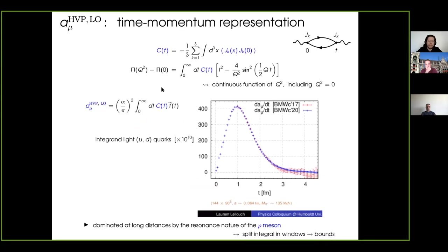There is another representation which is safe with respect to the small Q squared problem — the so-called time-momentum representation. In this representation, the basic non-perturbative ingredient is C(T), which is the Fourier transform in space at zero momentum: a zero-momentum two-point correlation function, which is the basic object that lattice QCD groups are nowadays computing. T here is the Euclidean time distance between the two electromagnetic currents. The integrand has a shape peaked around one fermi, but at large distances there is an exponential increase of the noise.